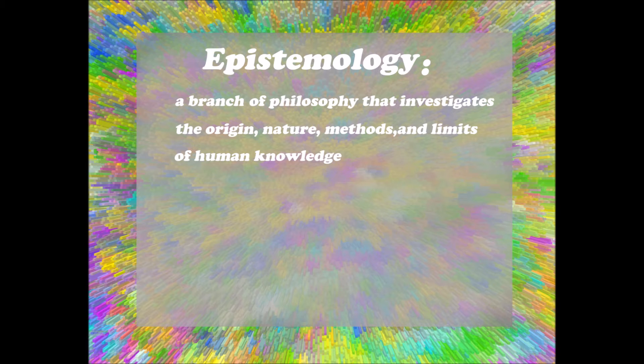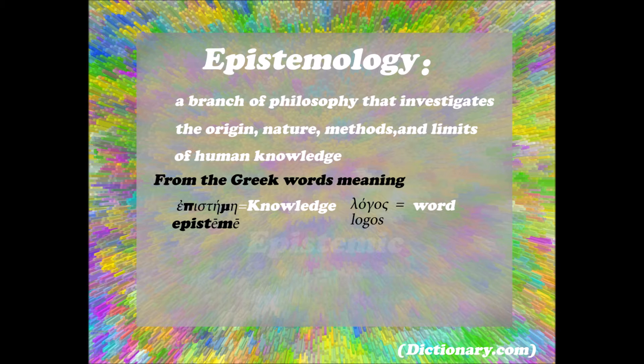This section of philosophy attempts to try and solve what we know, how we know it, and how, or why, it can be justified. It is derived from the Greek words of episteme, meaning knowledge, and logos, meaning word. This root word leads to the adjective epistemic: of, or relating to knowledge, or the conditions for acquiring it.